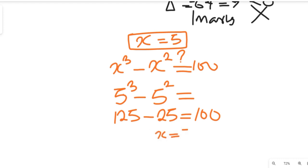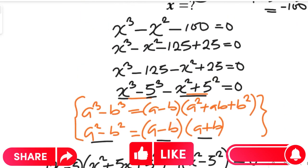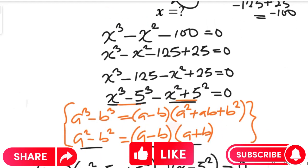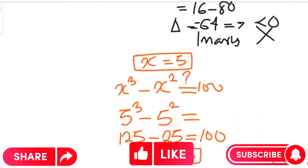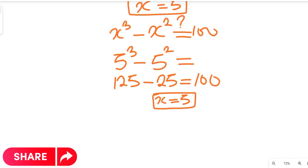Subtracting, we get 100, which confirms x equals 5 satisfies the original equation. So x equals 5 is the solution. This question looks very easy initially, but we've shown how to solve it comfortably to arrive at a reasonable solution. Please like, comment, and subscribe to the channel, and share this video with friends and colleagues. Thanks for watching.